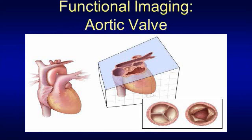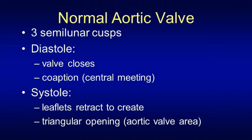Functional valve imaging requires retrospective cardiac gating. Let's take a quick review of the aortic valve. There are three cusps. During diastole, the valve is closed and the cusps meet centrally, which is called coaptation. During systole, the leaflets retract to create a triangular opening, which is the aortic valve area. With retrospective gating, we image over multiple cardiac cycles and can assess aortic valve function over time.